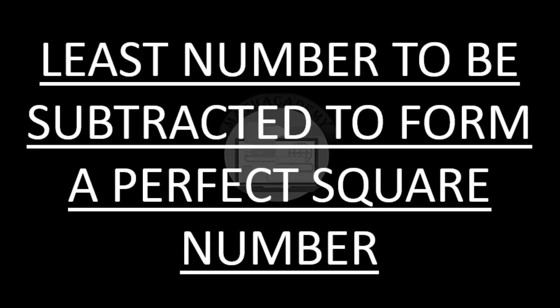Hi! In this video, we will see that if a given number is not a perfect square number, what is the least number that we need to subtract from it to make it a perfect square number. In the previous video, we have already seen what is the least number that has to be multiplied or divided to make a perfect square number. So in this video, we will see what is the least number that needs to be subtracted. Let us see this through an example.